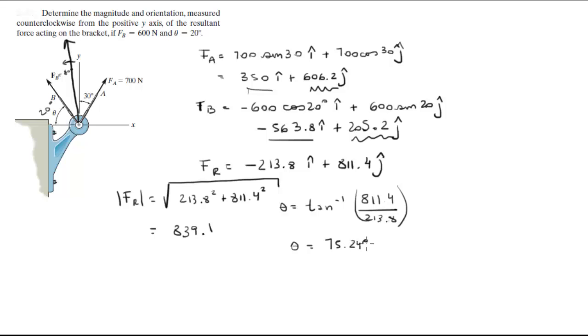And you get that the angle is equal to 75.24 degrees, but they asked you for the angle that it forms with the y-axis. It's not this angle, they're asking you for this angle right here. So all you gotta do is 90 minus theta equals, let's say call it phi, and phi is gonna be equal to 14.76 degrees.